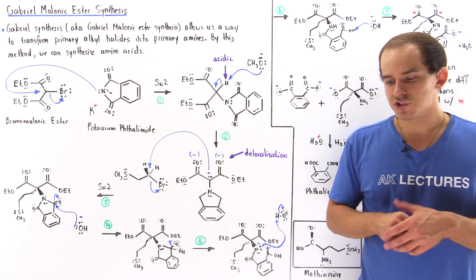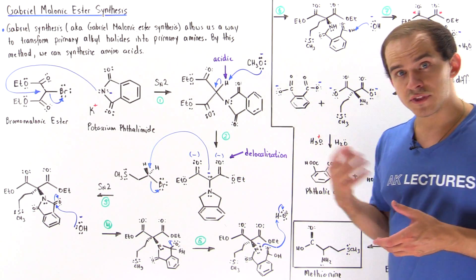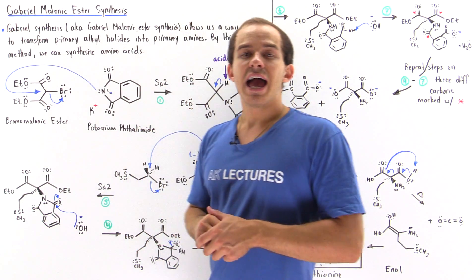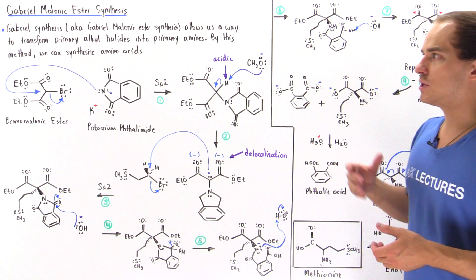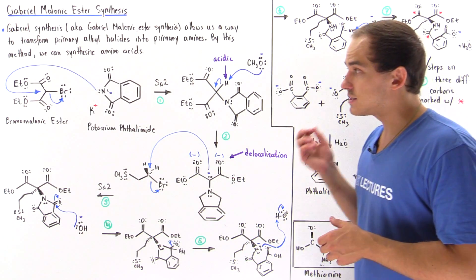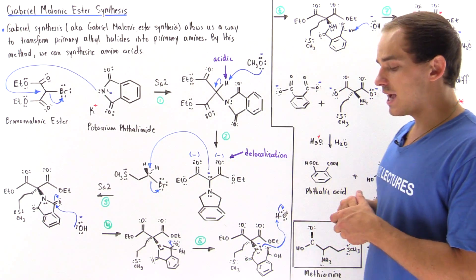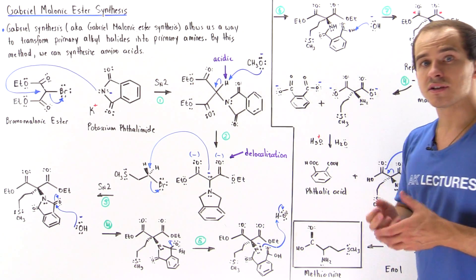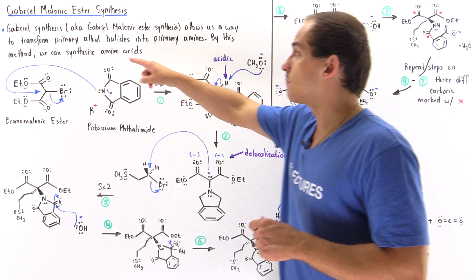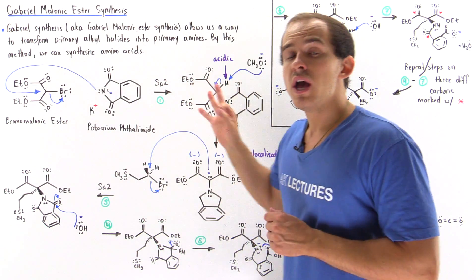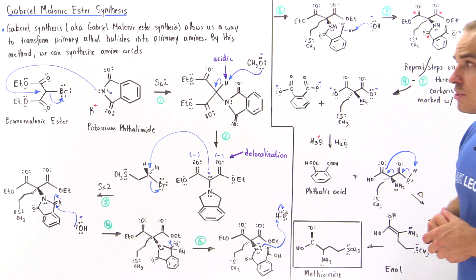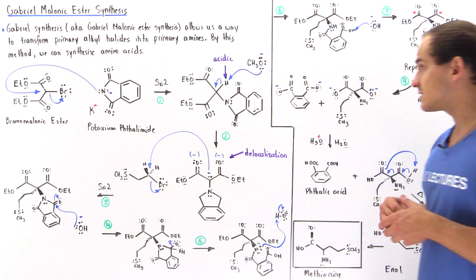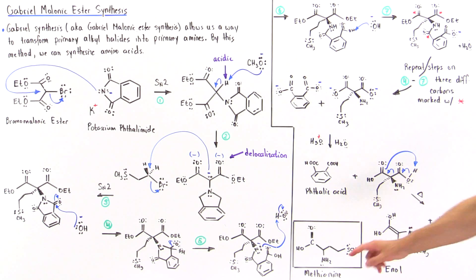Previously we discussed two reactions that we can use to synthesize amino acids. One of these reactions was the Gabriel-Malonic ester synthesis, or simply the Gabriel synthesis. In this lecture we're going to focus on the reaction mechanism of this reaction, specifically how we can synthesize the amino acid methionine. The Gabriel synthesis allows us to transform primary alkyl halides into primary amines.